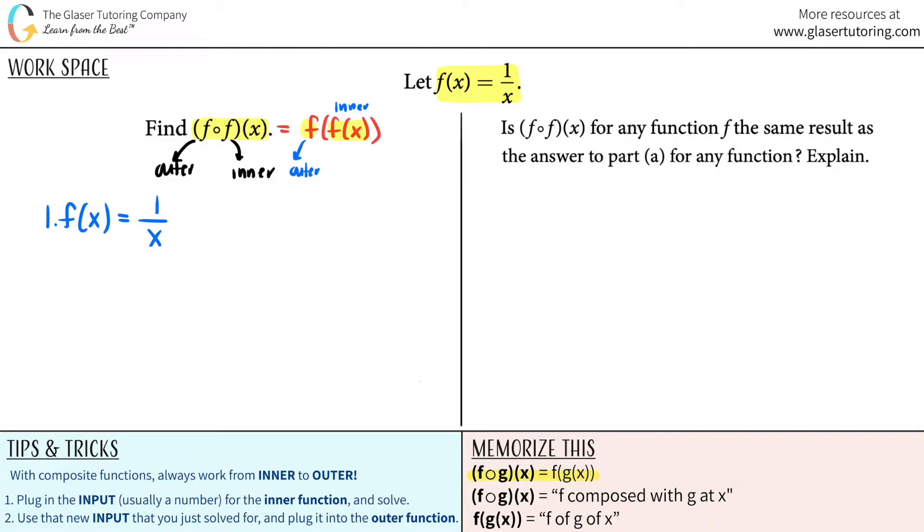That's the answer to the first part. And now we're going to take that answer, and that's going to be our new input that we just solved for and plug it into the outer function. And the outer function here is the same function, it's the f function. But instead of saying f of x, I now have my new answer that I have to plug in. It's one over x.